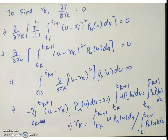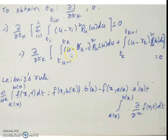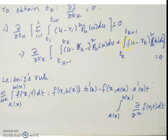Next, to find tk, the procedure is the same again: ∂J/∂tk = 0. Two terms in the summation are dependent on tk; all other terms are independent. Considering only those two terms: ∂/∂tk of the integral from tk−1 to tk of (u minus rk−1)² pu(u) du plus the integral from tk to tk+1 of (u minus rk)² pu(u) du should equal zero.